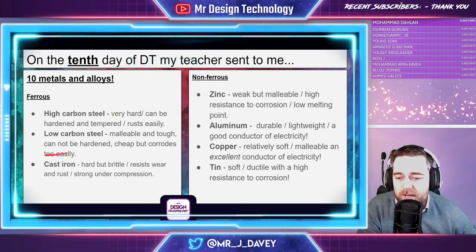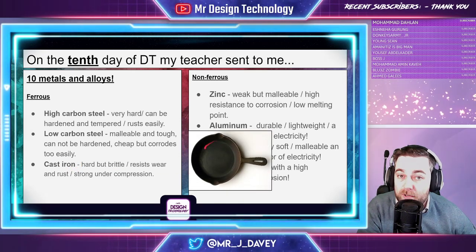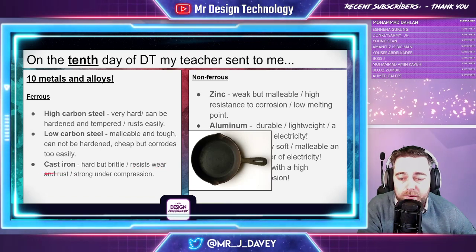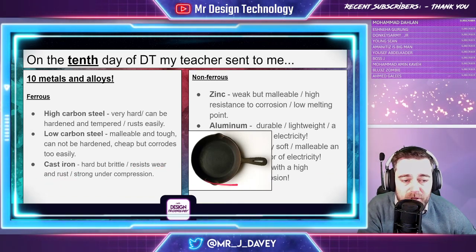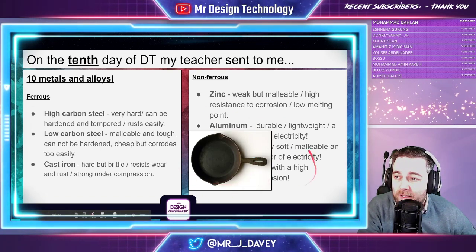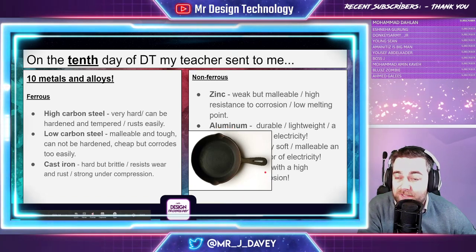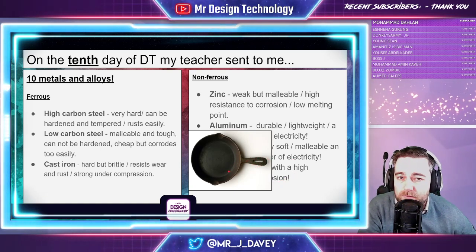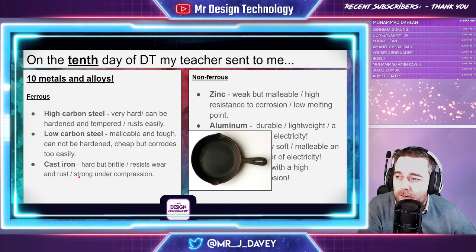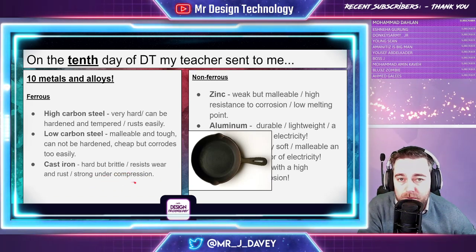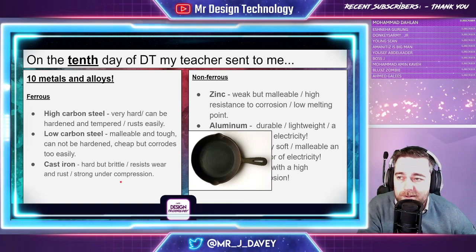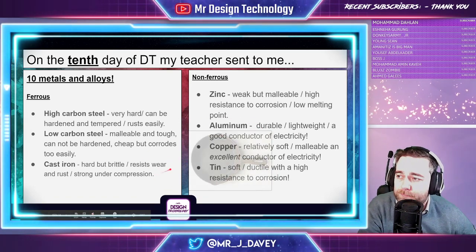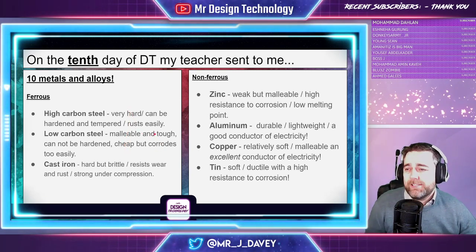Cast iron is very hard but brittle — there's a chance it can shatter. It resists wear and tear and resists rust, though it's very heavy. Think of a cast iron frying pan compared to a non-stick pan. Things like gates and manhole covers are made from cast iron because they need to withstand stress and compression, though better alternatives exist now.